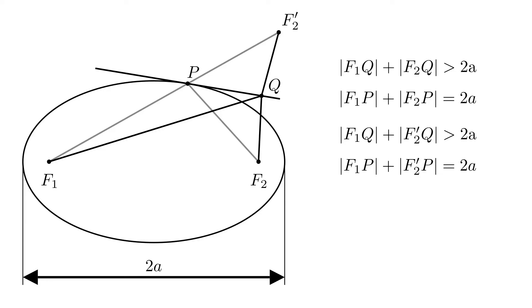Which means that the shortest path from f1 to f2 prime goes through p. Since the shortest path is a straight line, then p is on the line segment f1, f2 prime.